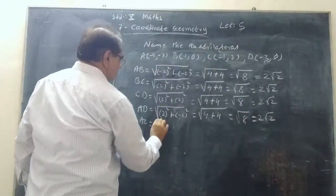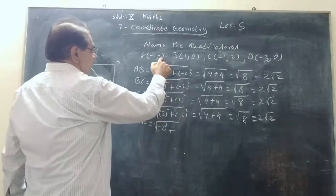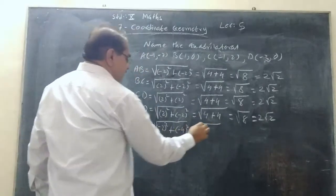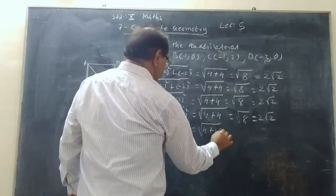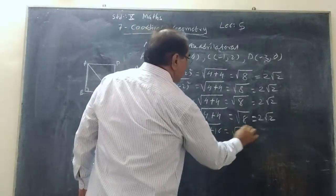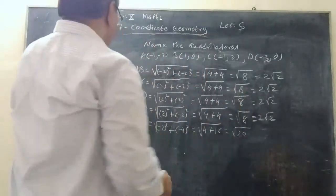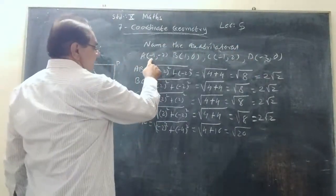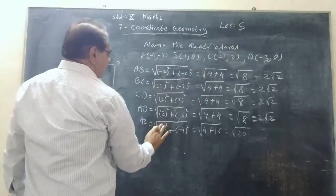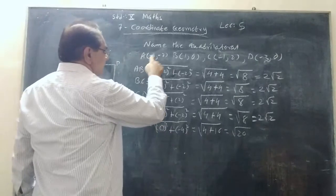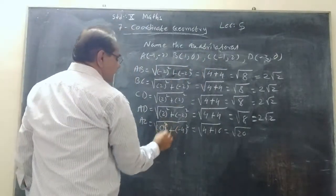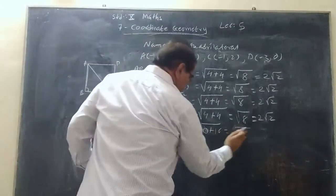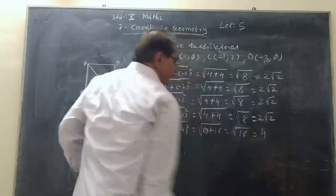AC = √[(-1-(-1))² + (-2-2)²] = √[(0)² + (-4)²] = √[0 + 16] = √16 = 4. Let me just check: A(-1,-2) to C(-1,2): x-difference is -1-(-1) = 0, y-difference is -2-2 = -4. So √[0 + 16] = √16 = 4.